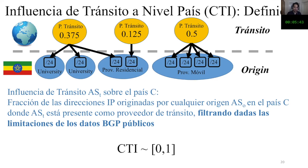This metric goes from zero to one and shows the influence a transit autonomous system has at the country level. If it is zero, the transit provider is not present in the country. If the value is near one or equal to one, it means that the transit provider covers all the IP addresses in the country. Looking at the distribution of metrics in each country we studied, we get an indication of how concentrated the ecosystem is. This is the example of Bolivia, which is quite similar.